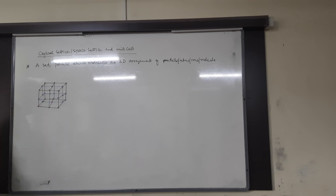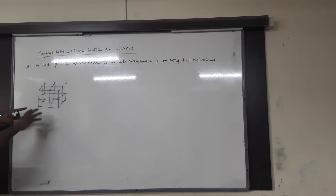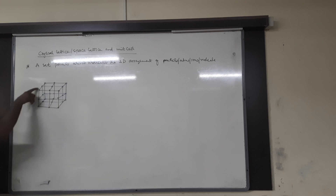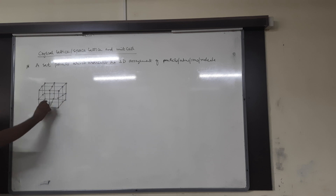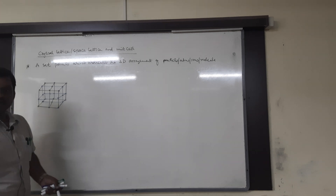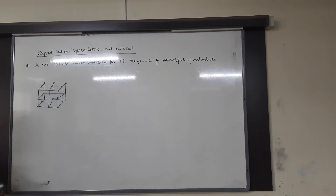This is a crystal lattice. In simple words, crystal lattice or space lattice is a three-dimensional arrangement of particles in space — how particles are arranged in space. Here, particles are arranged in the form of a cube, showing a 3D space arrangement. So crystal lattice or space lattice is simply the three-dimensional arrangement of particles in space.